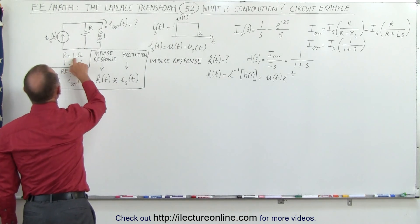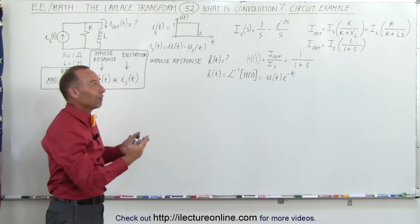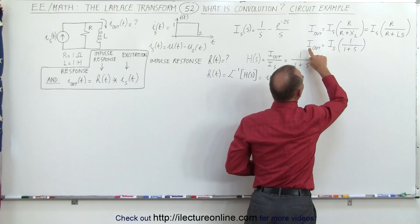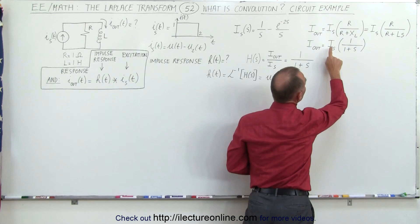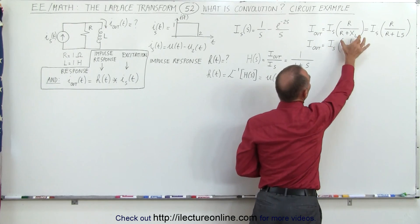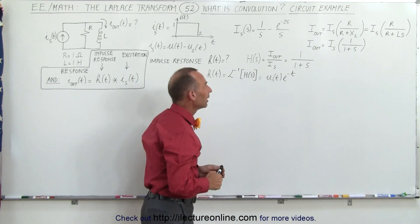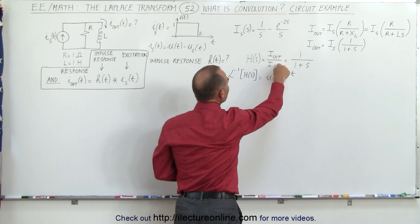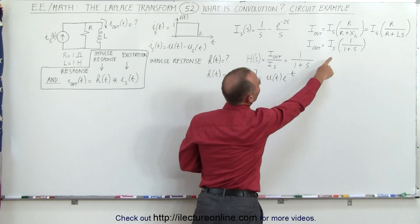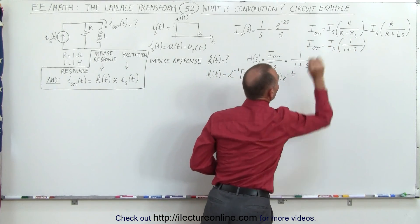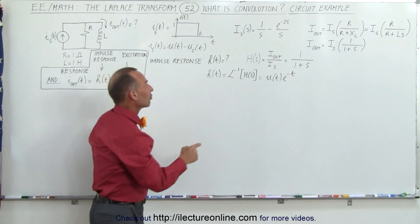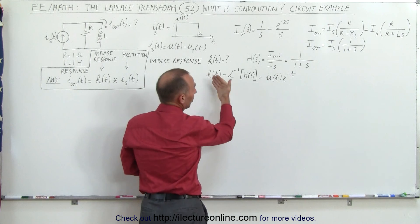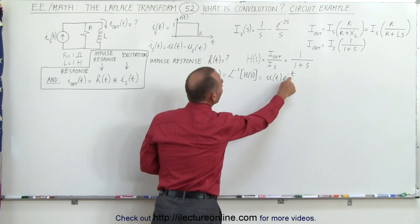We've defined the resistance as 1 ohm and the inductance as 1 henry — unlikely in a real circuit, but it makes things easy to demonstrate. Plugging in 1 for R and 1 for L, the output current to the inductor in the frequency domain equals the input times 1/(s+1). We define the impulse response in the frequency domain as output divided by input, which is 1/(1+s). Taking the inverse Laplace transform gives us the impulse response in the time domain: h(t) = e^(-t).